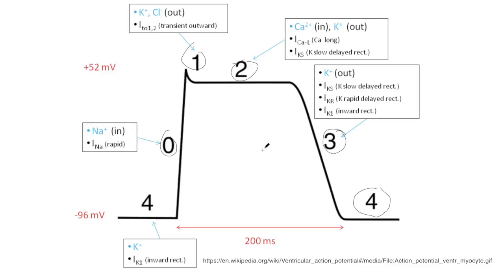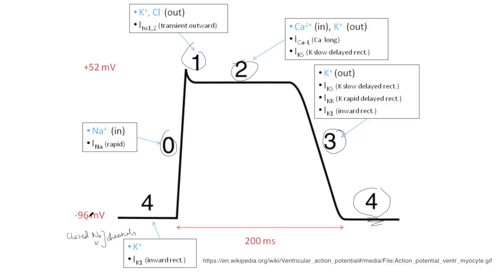The ordering of these is a little bit odd in that phase 4 is actually the one that we consider occurring first. That's the point of isoelectricity, where sodium and calcium channels are closed but there are leaky potassium channels allowing the membrane potential to stay at about minus 90 millivolts.